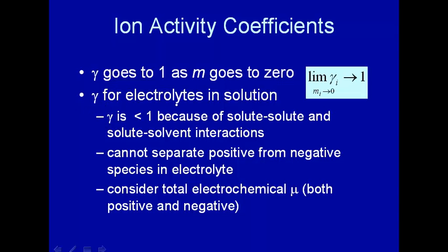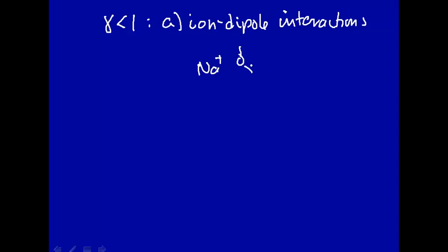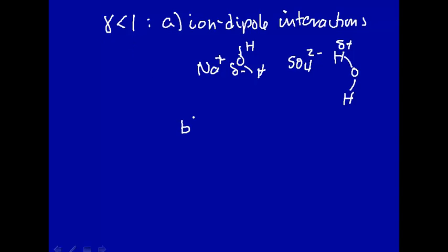For electrolytes — for ions in solution — the activity coefficient will be less than 1 because of solute-solute and solute-solvent interactions. Gamma is less than 1 for two reasons. First, you have ion-dipole interactions of these ions in water. For example, sodium ions interact with the partial negative charge on the oxygen of water. Similarly, for sulfate, the partial positive charge of hydrogen associates with the negative charge of sulfate. This takes sodium ions out of solution — they are bound up by water and so are not as active as expected, making the activity coefficient less than 1.